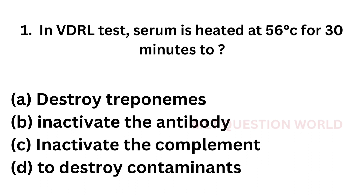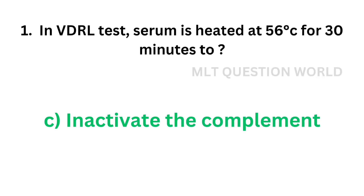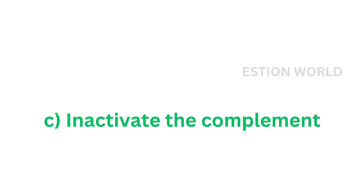Question number 1. In VDRL test, serum is heated at 56 degrees Celsius for 30 minutes to: Option A, destroy troponins; Option B, inactivate the antibody; Option C, inactivate the complement; Option D, to destroy complement. The correct answer is Option C, to inactivate the complement. In VDRL test, serum is heated at 56 degrees Celsius for 30 minutes to inactivate the complement.